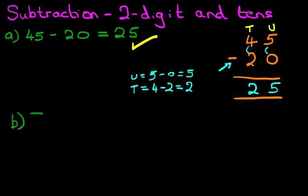What is 79 minus 50? Now the first stage is to write this down in the vertical format. So let's do this over here. We have 79 minus 50.